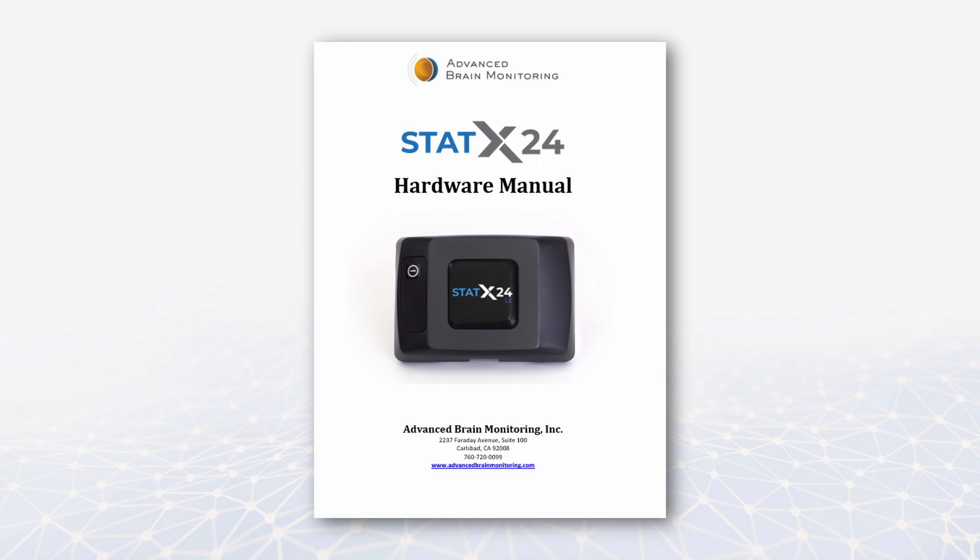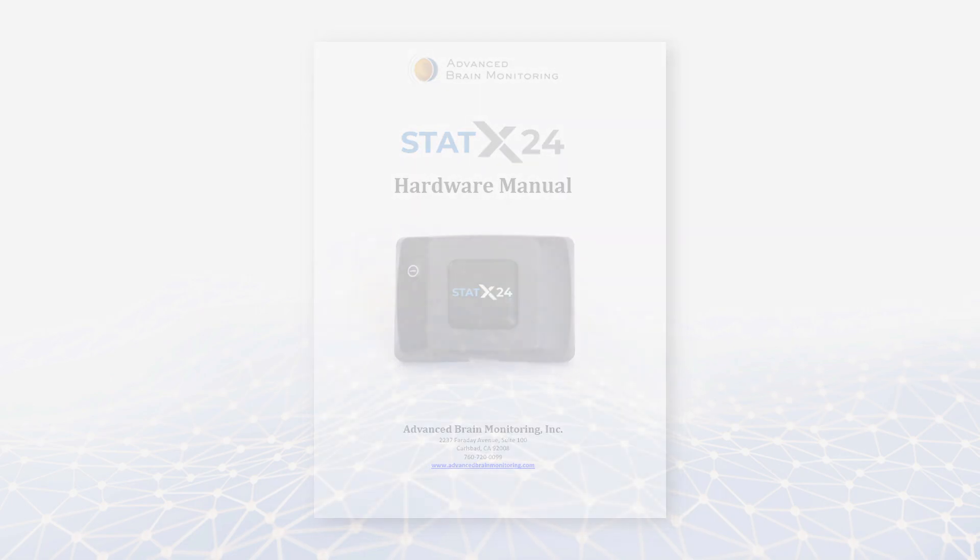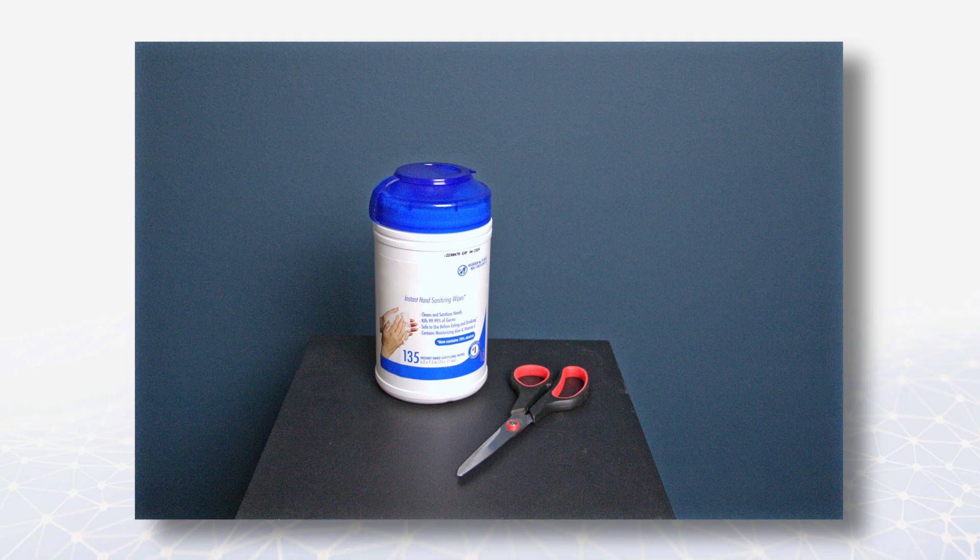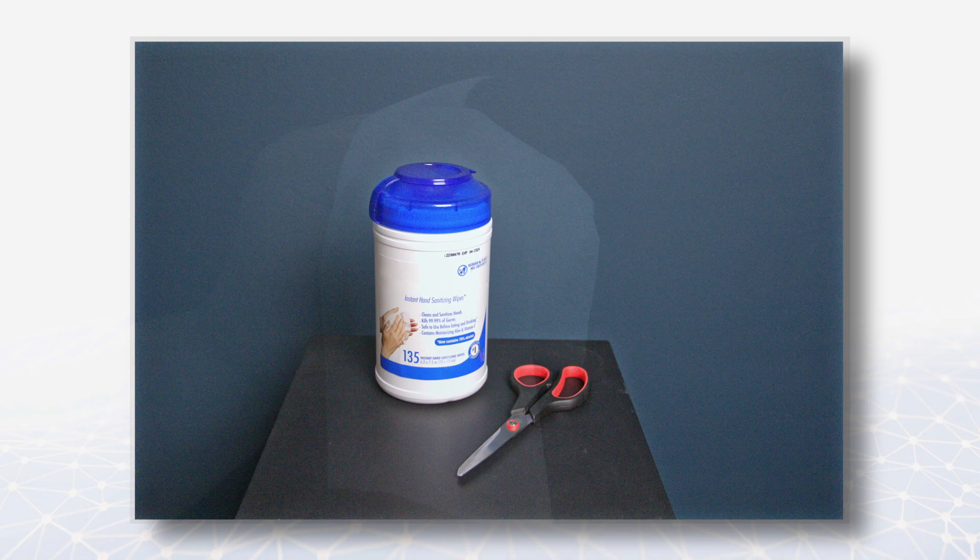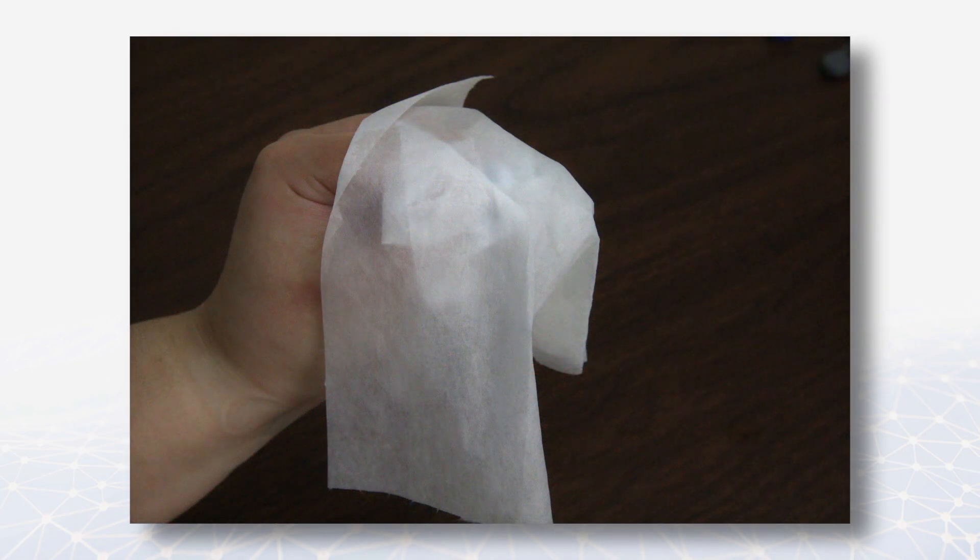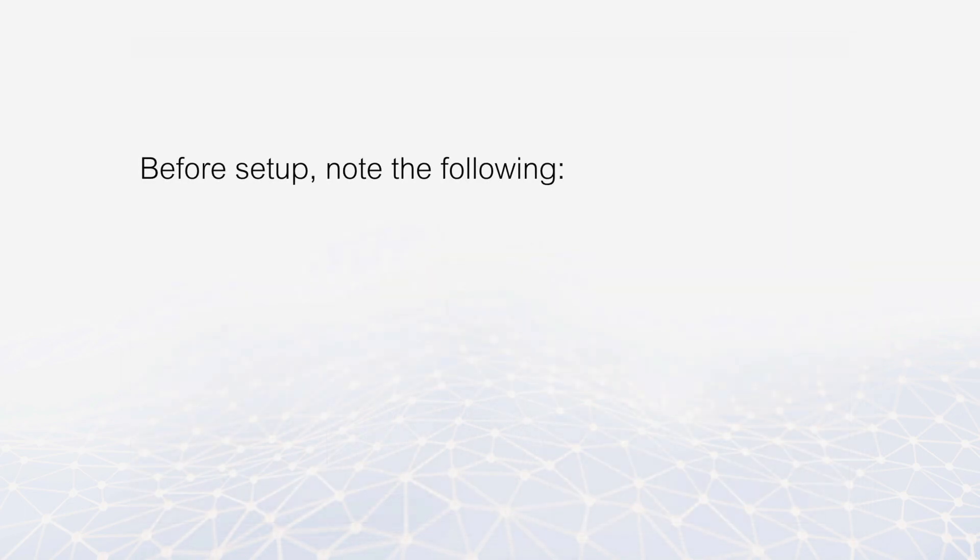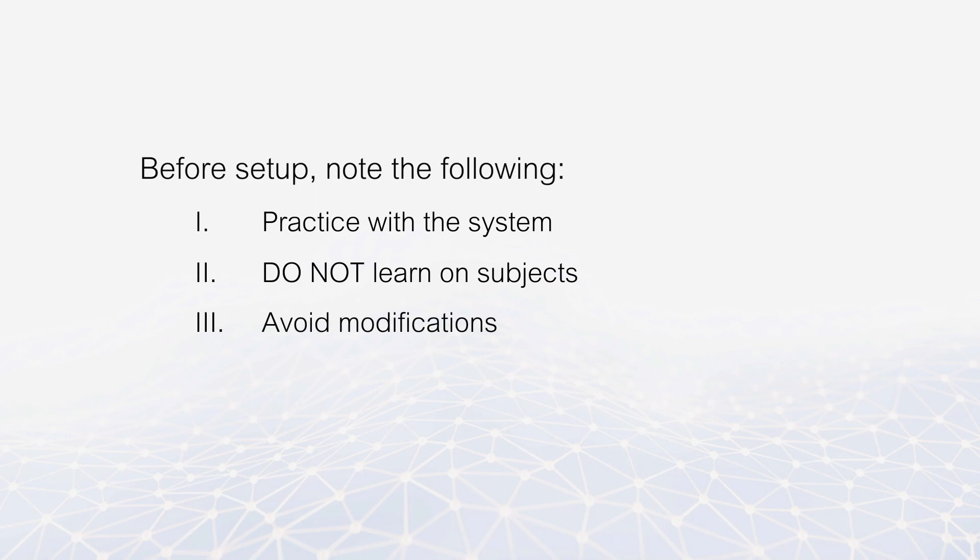Before performing an acquisition, refer to the hardware technical manual to ensure that you have received all necessary equipment and make sure your headset is fully charged. Please note that scissors and 70% isopropyl alcohol wipes are also necessary, however these are not included with your ABM system. We suggest you purchase large, sturdy alcohol wipes as they provide the best results. Before you begin a setup, take note of the following: Practice setting up and familiarizing yourself with the system. Learning the system on official subjects is not recommended. Modifications to instructions may lead to negative effects on system performance.